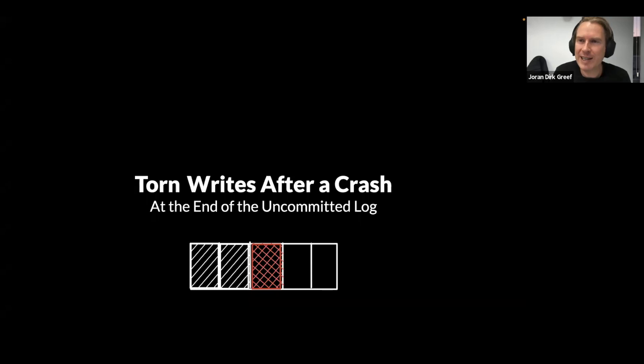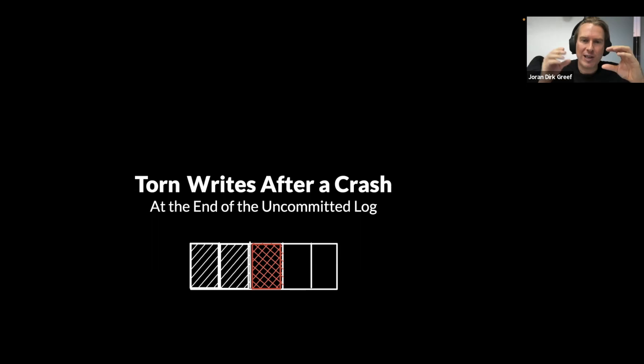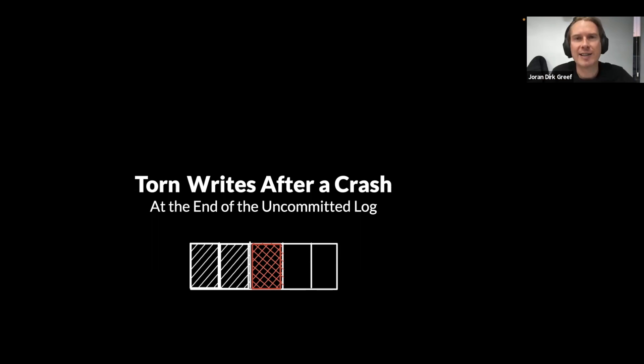Let me show you two scenarios. The easy one: you have power loss. Your primary is appending to the log, then you lose power. The last entry in your log is corrupt. You come back up after a crash, see a checksum failure, and truncate the log at that point — that's what everybody does. But how about this one: you come back up, see a checksum failure in the middle of your committed log, and just truncate the rest of the log. Can you see the bug there? This is what most databases do today, and there are very few systems that actually handle this correctly.